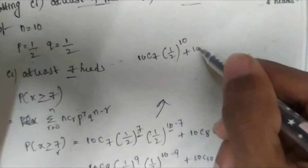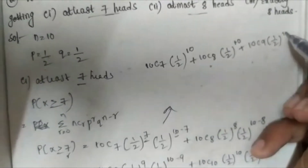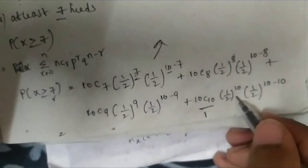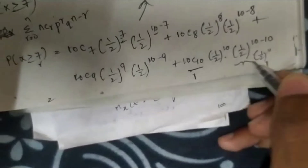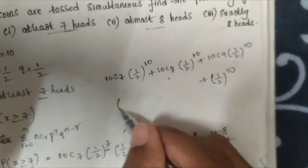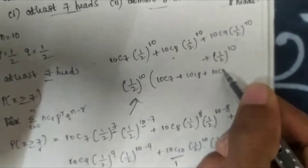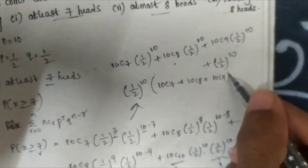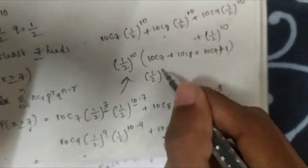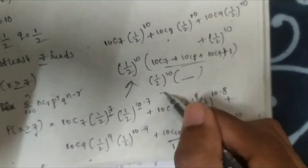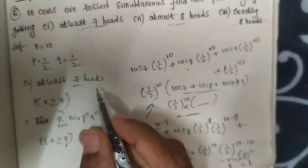We get 10C7 * (1/2)^10 + 10C8 * (1/2)^10 + 10C9 * (1/2)^10 + 10C10 * (1/2)^10. Note 10C10 = 1 and (1/2)^0 = 1. Taking (1/2)^10 common, we get (1/2)^10 * (10C7 + 10C8 + 10C9 + 1). Calculating this value, the answer for at least 7 heads is 0.17875.